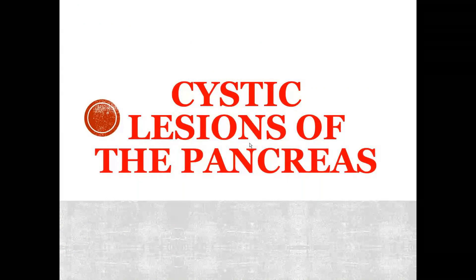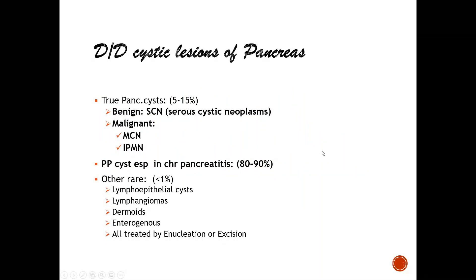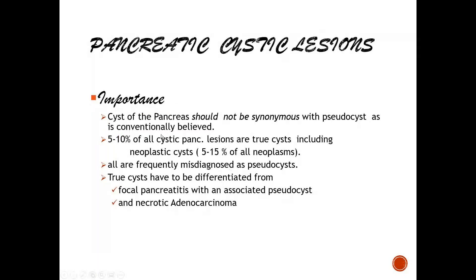Cystic lesions of the pancreas: true pancreatic cysts represent 5-15%, pseudopancreatic cysts 80-90%, and rarer types such as lymphoepithelial, lymphangioma, dermoid, and enterogenous cysts are less than 1%. A critical principle is that any cystic pancreatic lesion should not automatically be assumed to be a pseudocyst. Up to 5-10% of all cystic pancreatic lesions are true cysts including neoplastic cysts, and 5-15% of all pancreatic neoplasms are frequently misdiagnosed as pseudocysts.